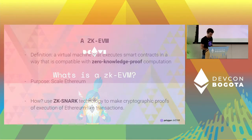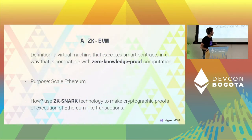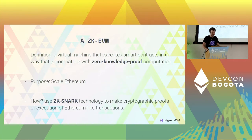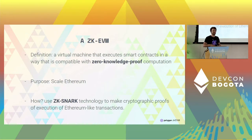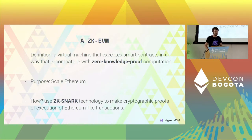What is a zkEVM? There are three statements that I think define the minimum of a zkEVM: it is a virtual machine that executes smart contracts in a way that is compatible with zero-knowledge proof computation. And why would we like to do this? Because our goal is to scale Ethereum — we want to increase the throughput of Ethereum, the transactions per second, at the same time that we lower the fees. We use zkSNARK technology to make cryptographic proof of execution of Ethereum-like transactions.